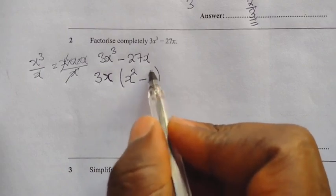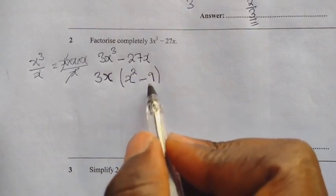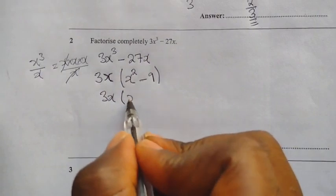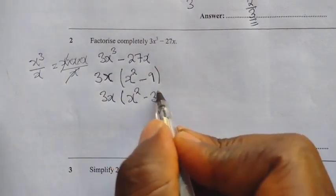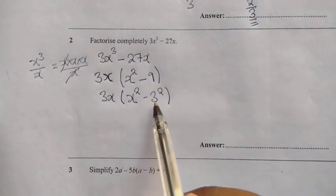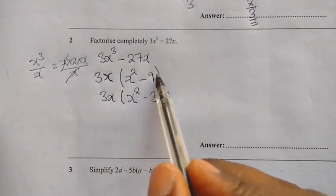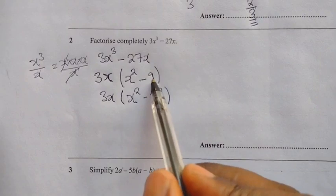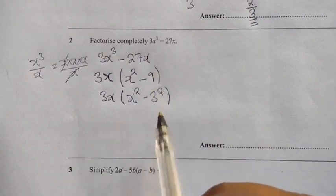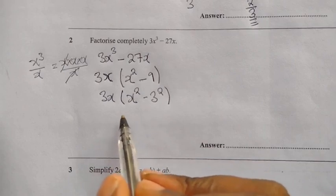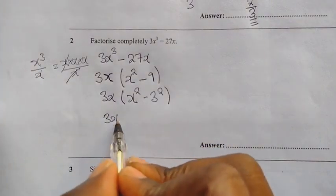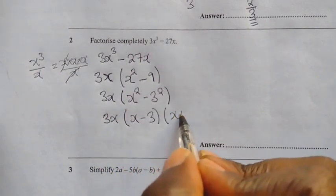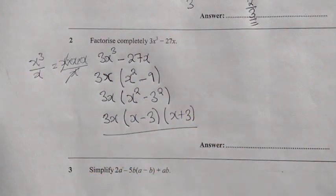This 9 can be written in index form as 3 squared, so we have 3x open bracket, x squared minus 3 squared. Now we apply the difference of two squares. So we write 3x, open bracket, x minus 3, open bracket, x plus 3. This is our answer.